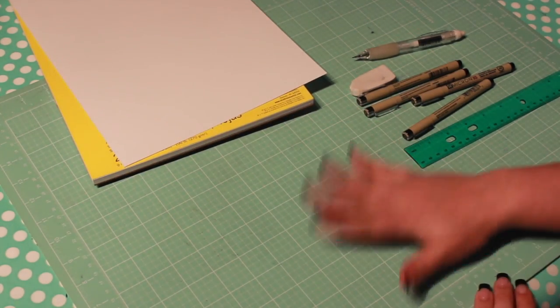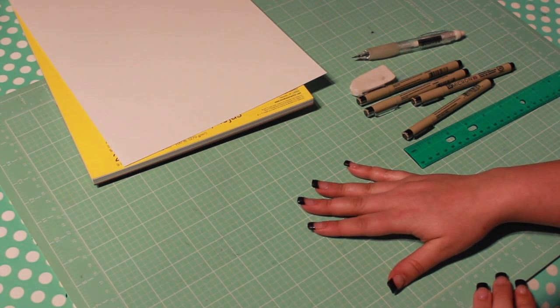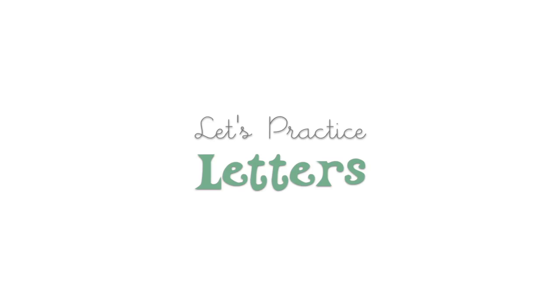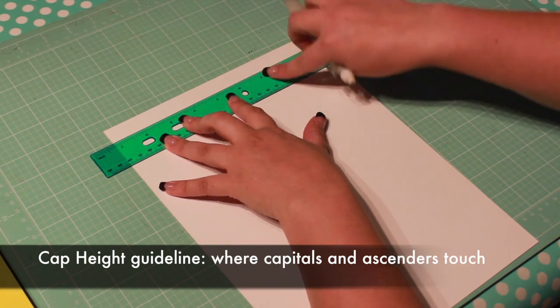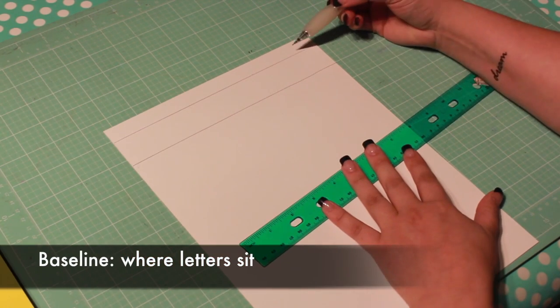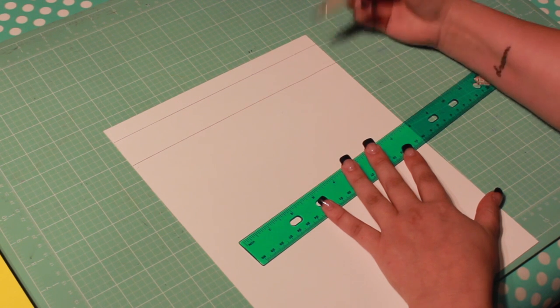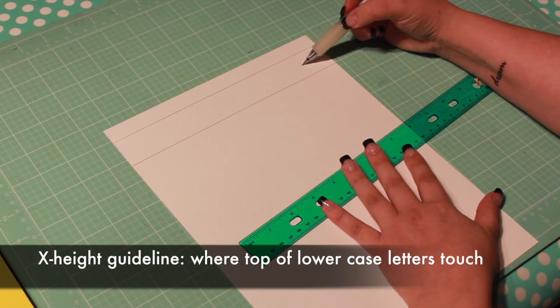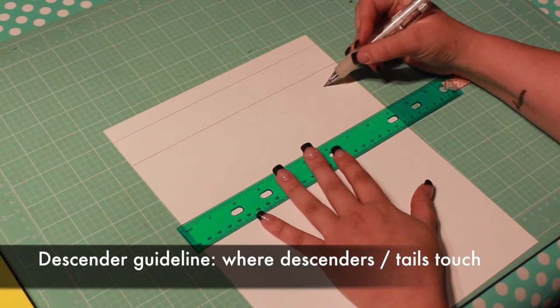Some people like to draw at an angle, placing a slanted binder beneath their work. However, I'm more comfortable working on a flat table. Guidelines can assist you in creating balanced, uniform letters. I like to draw a cap-height guideline which the capital letters and ascenders will touch, as well as a baseline where the letters will sit. You can add other guidelines as needed, such as an x-height guideline where the top of lowercase letters will touch. You may also wish to draw a descender guideline where descending tails will touch.